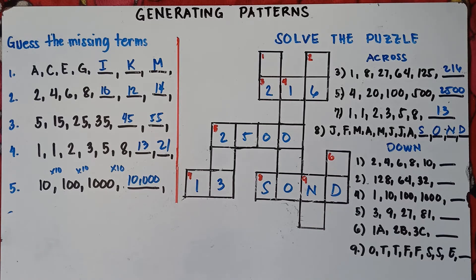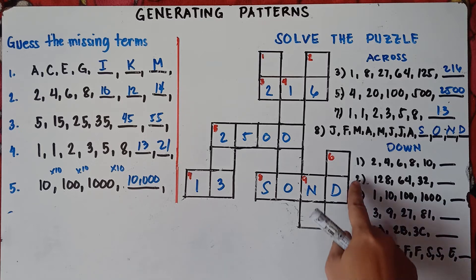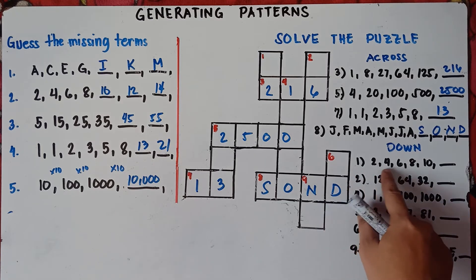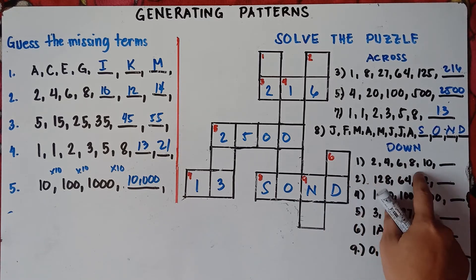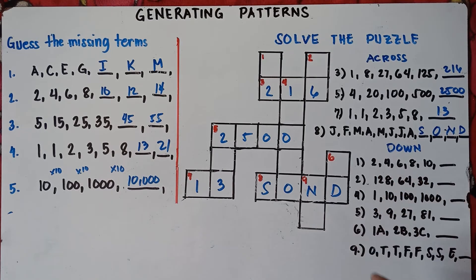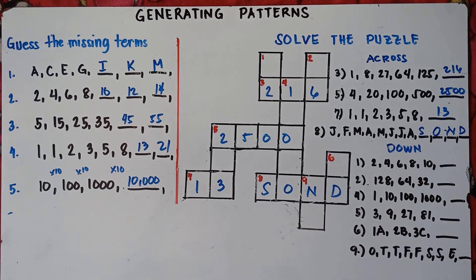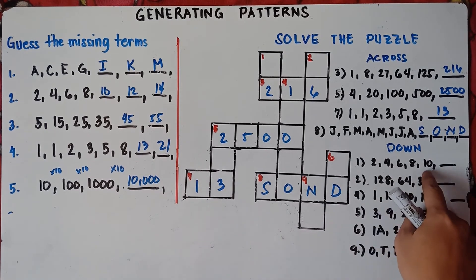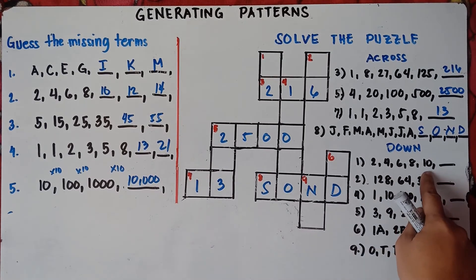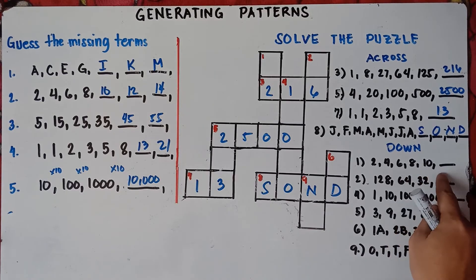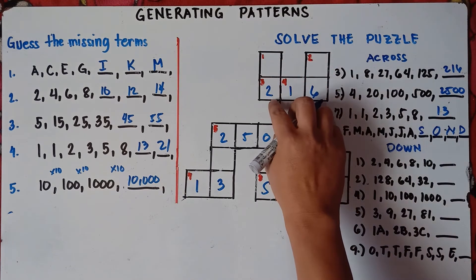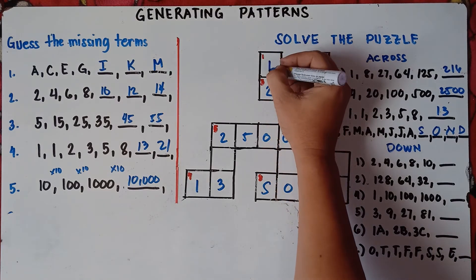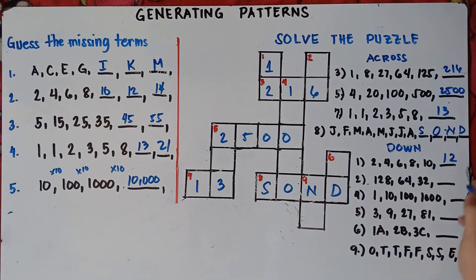Let's proceed to down — vertical. For number 1 down: 2, 4, 6, 8, 10. You just add 2. So 10 plus 2 is 12. The answer for number 1 down is 12.